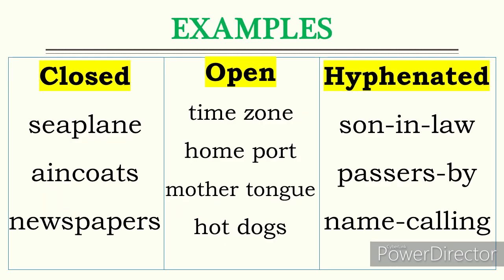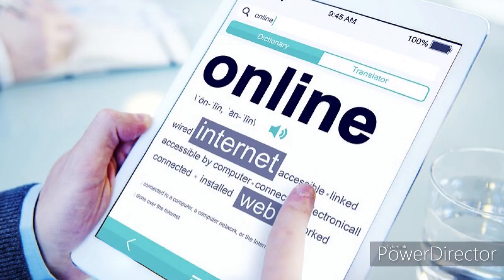Examples of closed compound words are shown on screen. Examples of hyphenated compound words are son-in-law, passers-by, and name-calling. These words are connected by a hyphen. To make sure you are writing compound words correctly, you can check them in different sources such as the dictionary or the internet.